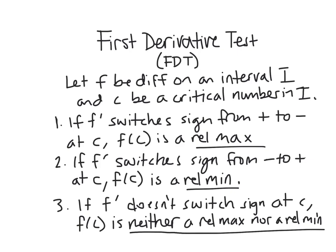If f prime switches from positive to negative, well, what does that really mean? That means we're going from increasing, we hit this point, and then we start decreasing. So this is a relative max here at f of c.